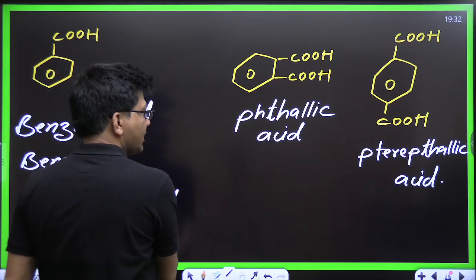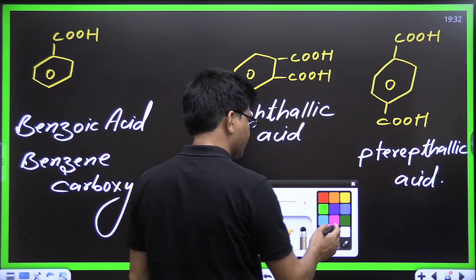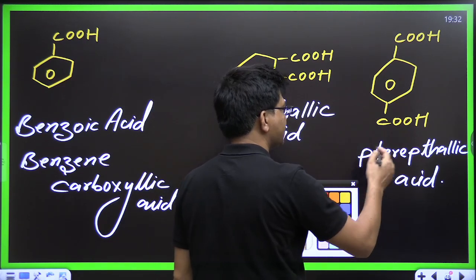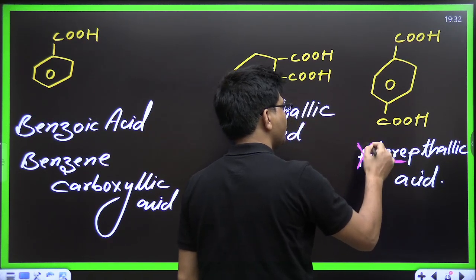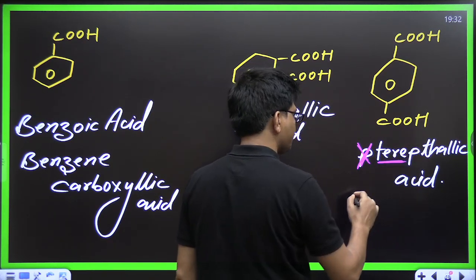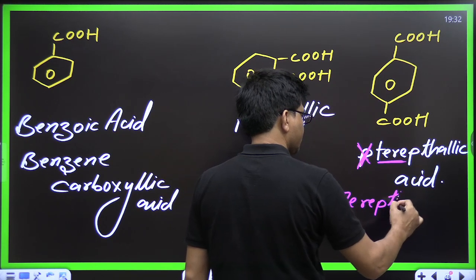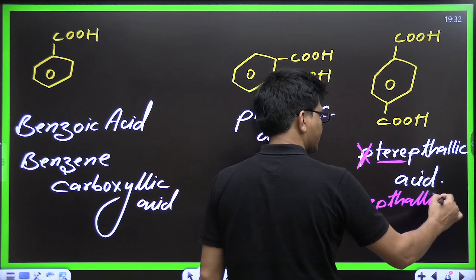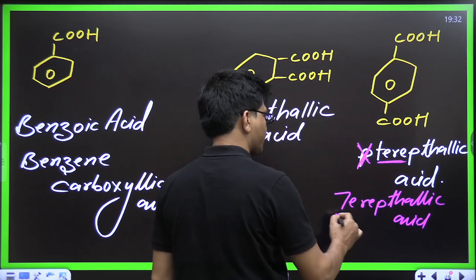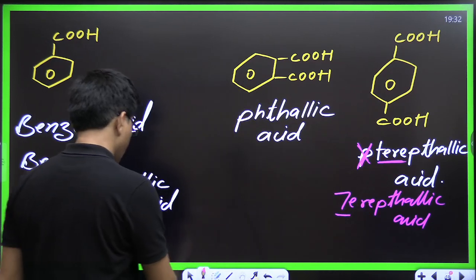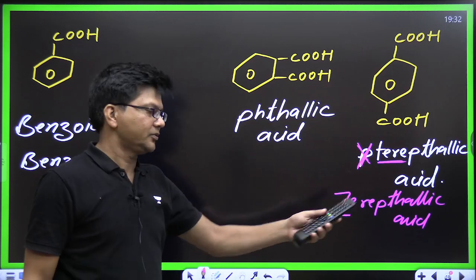Sometimes you will see terephthalic acid written starting with P, but now it is written as terephthalic acid without the leading P. English is a funny language — nowadays you will get terephthalic acid written in this newer form, no secrets.